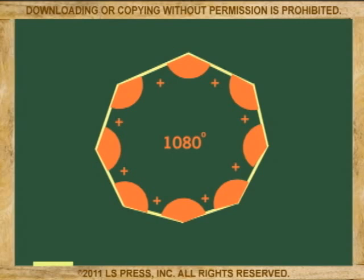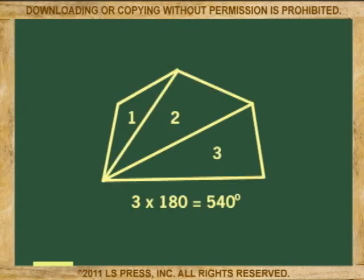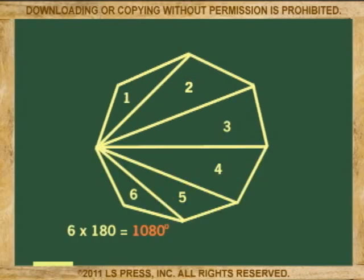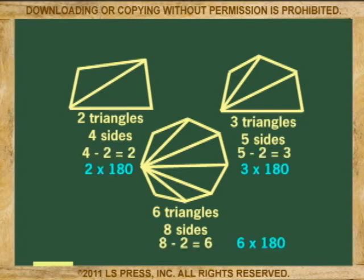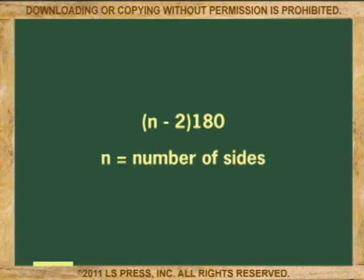And so on. What this tells us is that there is a pattern here. And in math, patterns may be turned into an equation. The pattern we see here is that every time we calculate a new polygon, we are in reality subtracting two sides of the polygon in question, and then multiplying the result by 180. As an equation, it would be (n minus 2) multiplied by 180, where n is the number of sides of the polygon.